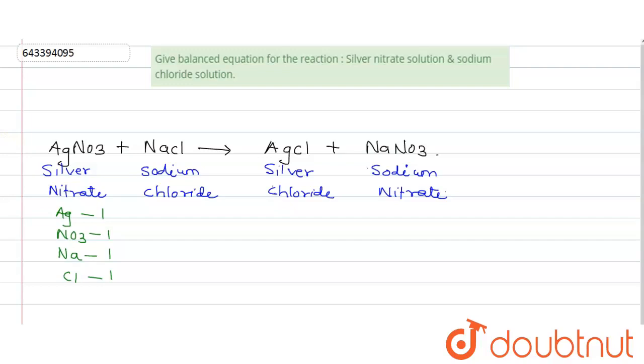So here it is, Ag is 1, chlorine is 1, Na is 1 and NO3 is 1. So we can see the number of molecule at reactant side and product side are same.